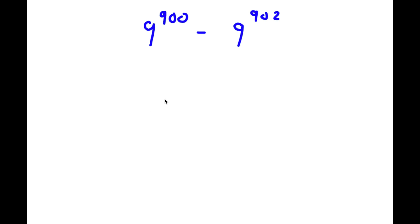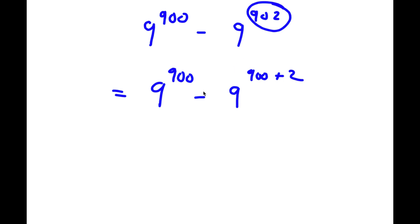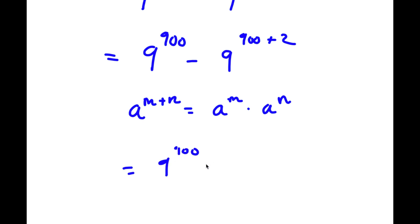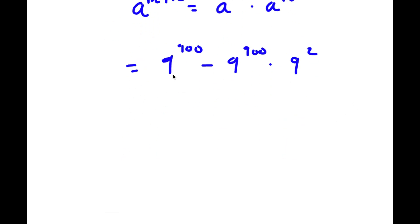In this problem, I have 9 to the power of 900 minus 9 to the power of 902. To solve this, I'm going to rewrite 902 as 900 plus 2. So now I have 9 to the power of 900 minus 9 to the power of 900 plus 2. Using the rule a to the power of m plus n equals a to the power of m times a to the power of n, I get 9 to the power of 900 minus 9 to the power of 900 times 9 to the power of 2. Factoring out 9 to the power of 900 gives 9 to the power of 900 times the quantity 1 minus 9 to the power of 2.